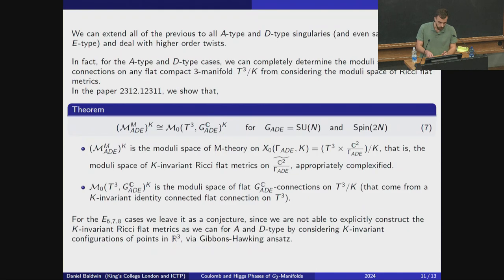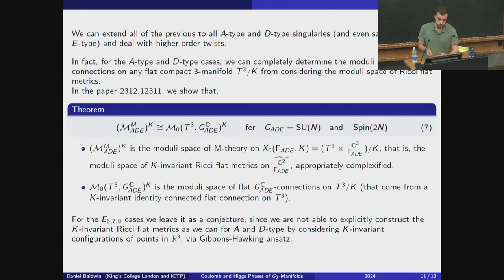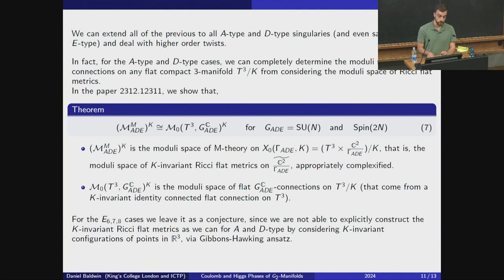We can extend all of this to all A-type and D-type singularities and higher-order twists. For the A- and D-type cases we can completely determine the moduli space of flat connections on any flat compact 3-manifold just from considering the moduli space of Ricci-flat metrics. This is shown explicitly in our second paper.